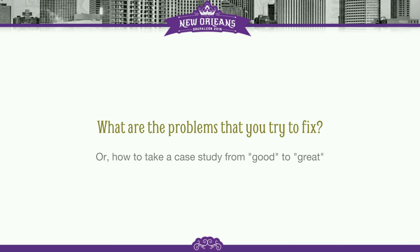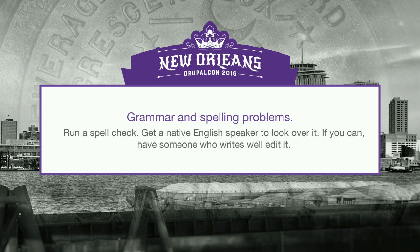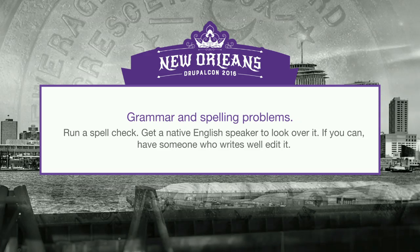We read every case study very thoroughly multiple times, so all of the feedback that we give you is going to be really thoughtful and coming from a genuine place of caring and wanting to help you make that content the best. We're not trying to be mean. We really want this featured showcase to be amazing and we want your case study to be amazing too. So, some of the common problems that we come across — also known as how to take a case study from good to great — number one problem: bad grammar. It's always so surprising. Please proofread, run a spell check, get somebody to look it over, especially if that somebody is fluent in English or a really good writer.